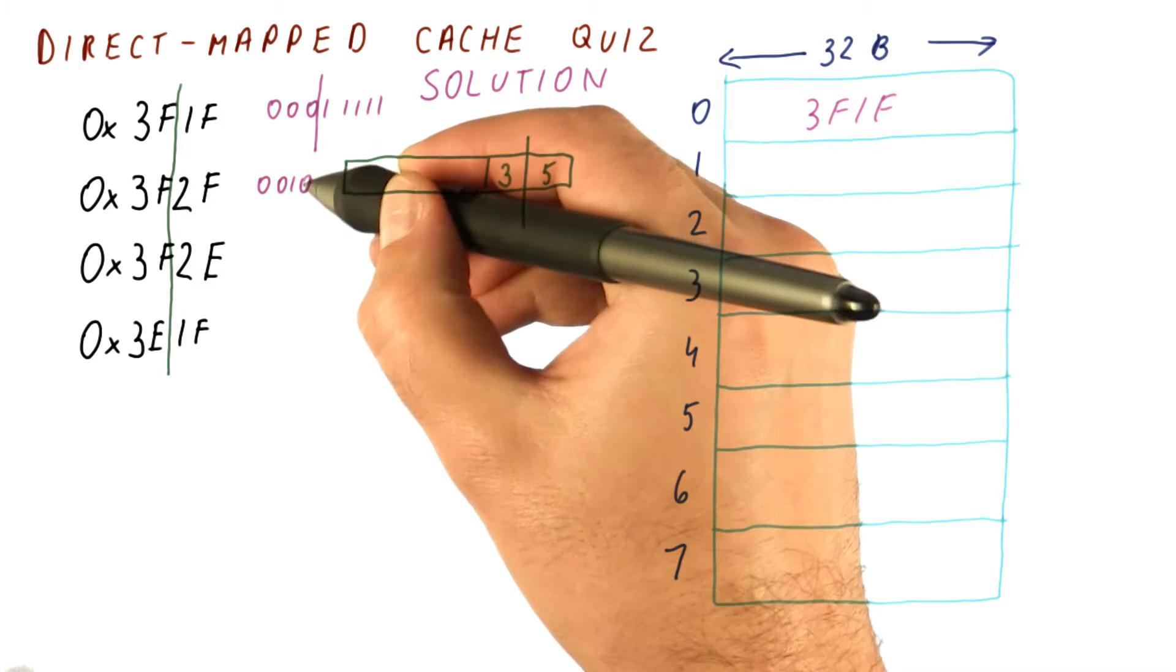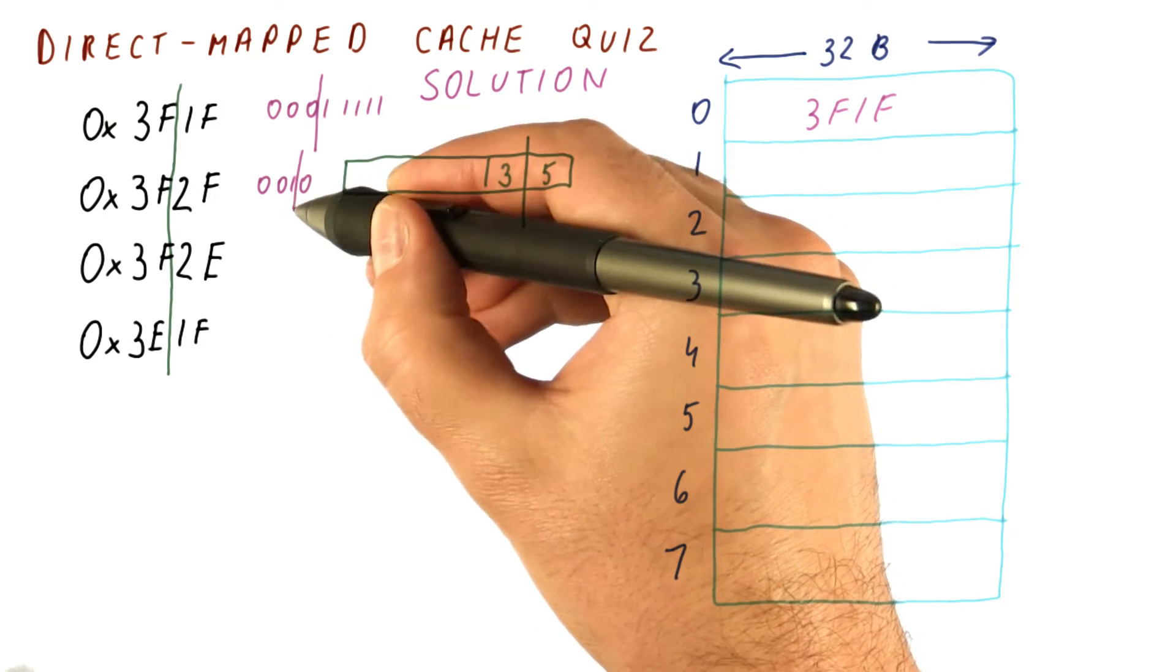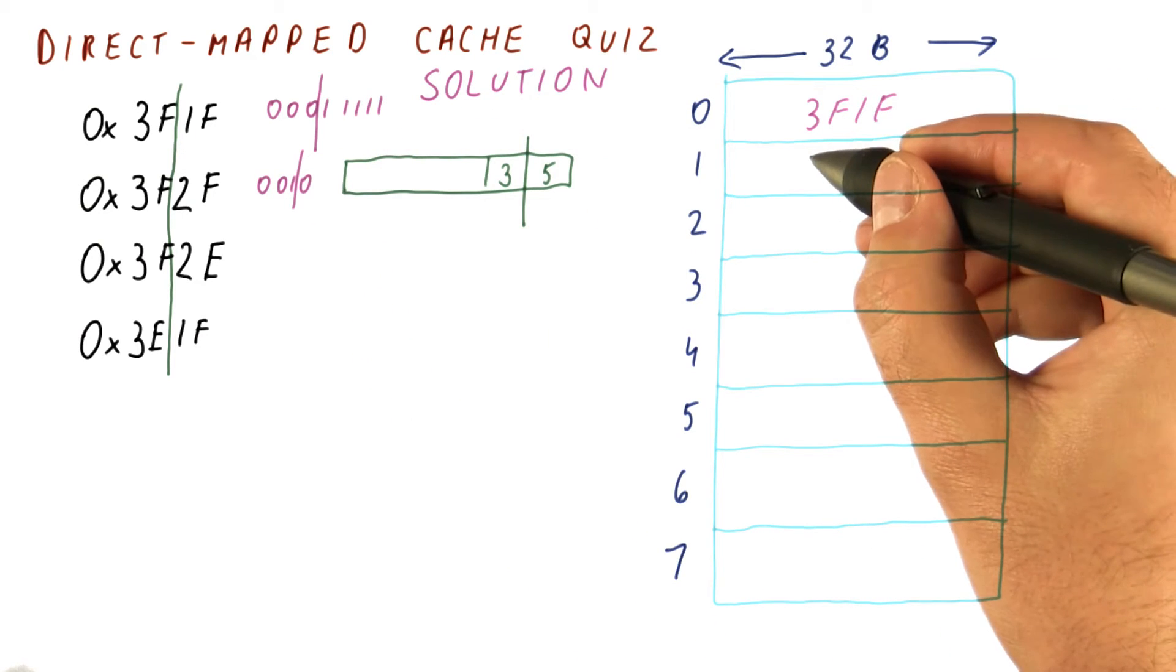3F2F has 0010 here, and then 11111, but it goes to index 1.